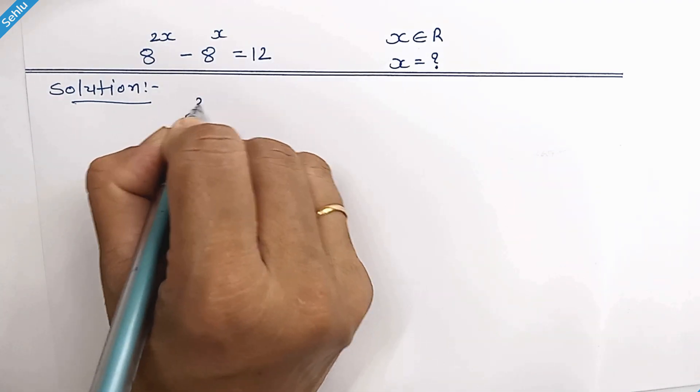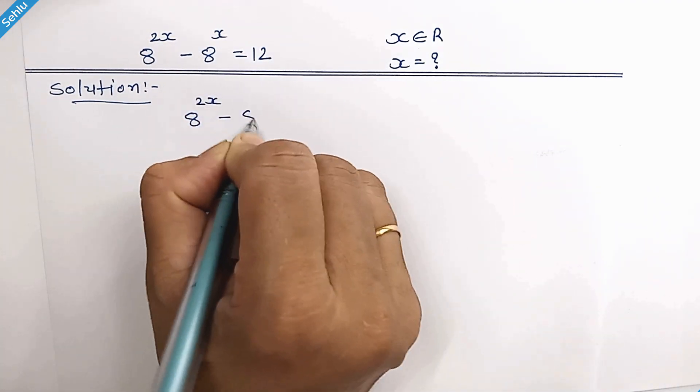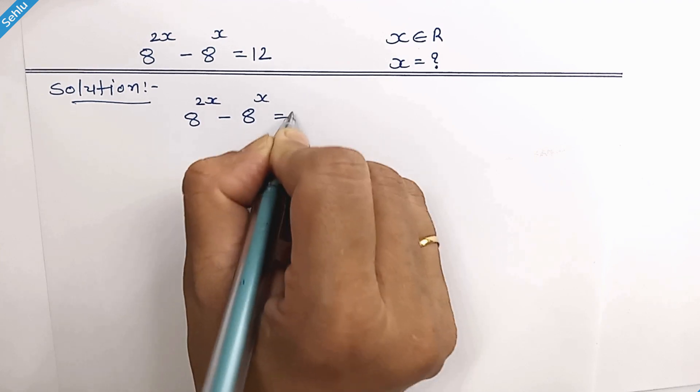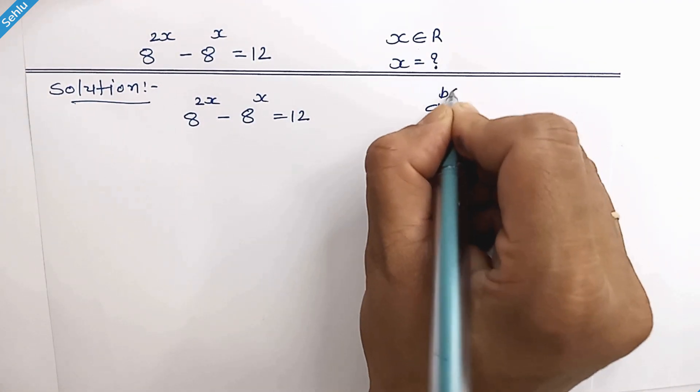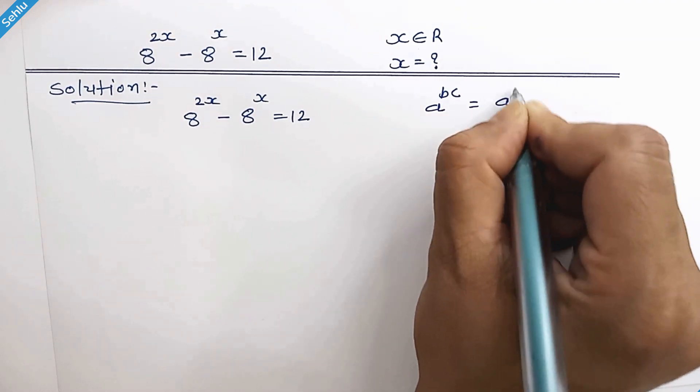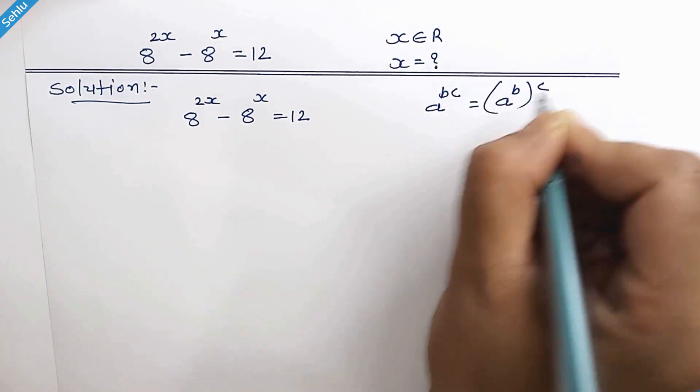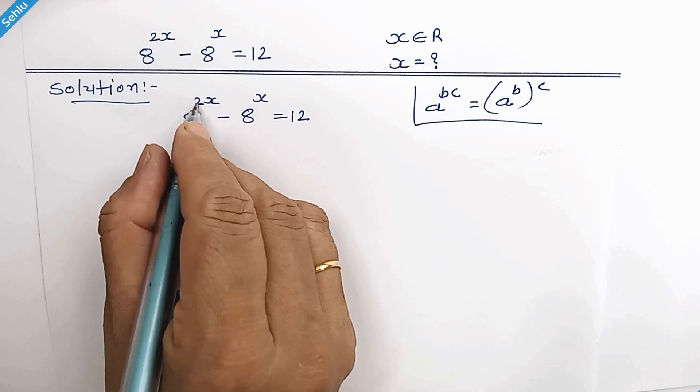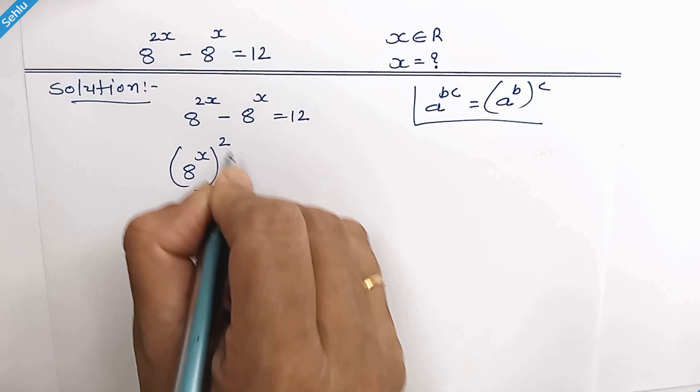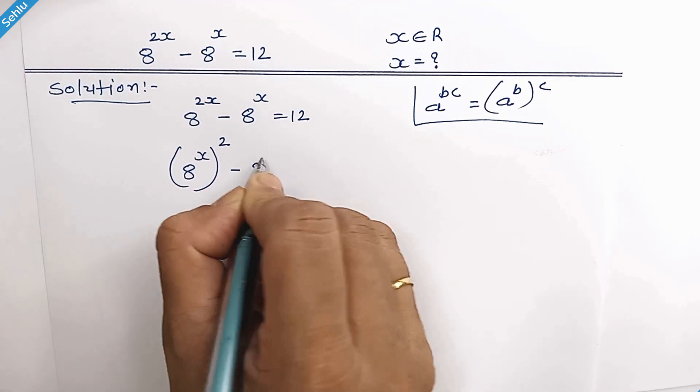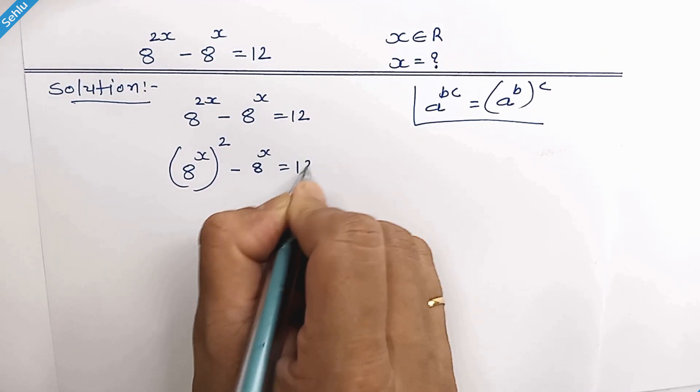Question is 8 to the power 2x minus 8 to the power x is equal to 12. When we have a to the power b times c, then it can be a to the power b whole to the power c. So this part can be written as 8 to the power x whole square minus 8 to the power x is equal to 12.